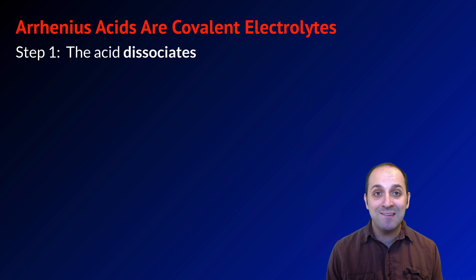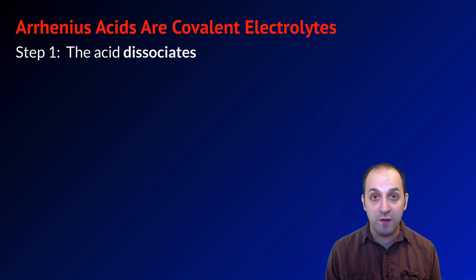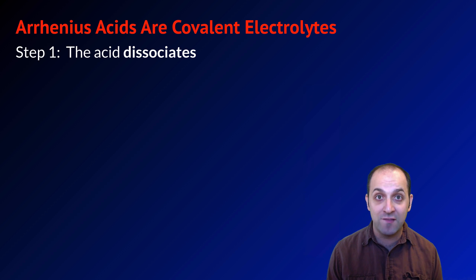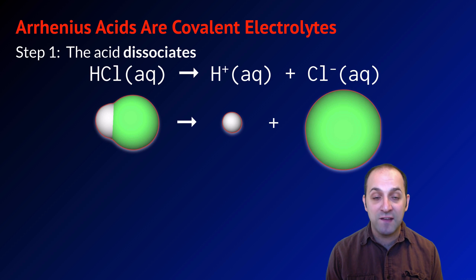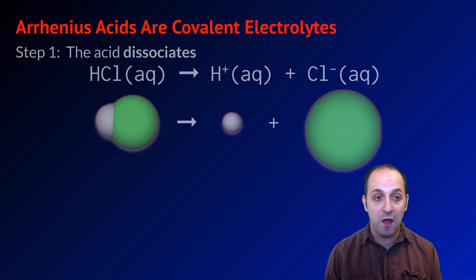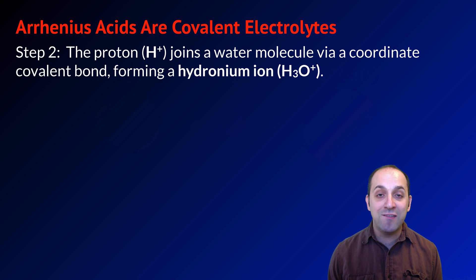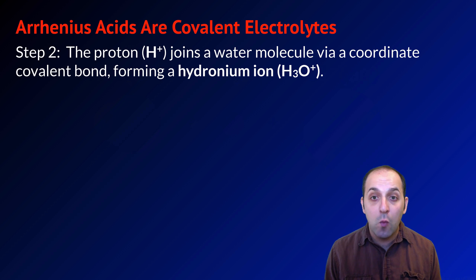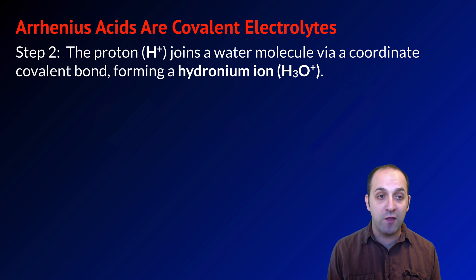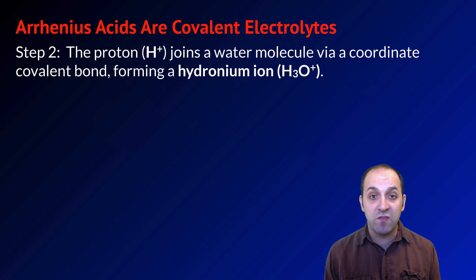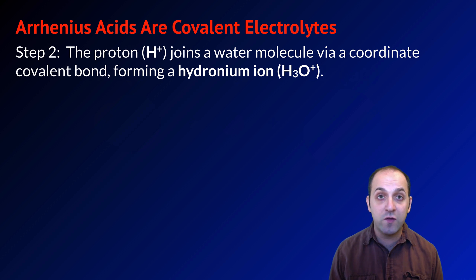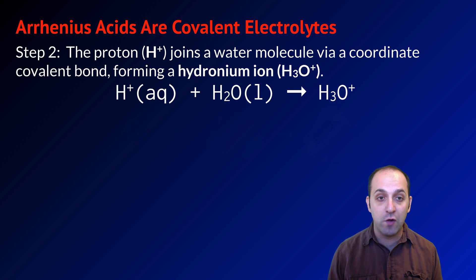Arrhenius acids are covalent electrolytes — really the only covalent electrolytes you need to be familiar with — because the acid dissociates. Here we can see HCl breaking apart into its H⁺ ion and its Cl⁻ ion. That H⁺ ion is then going to associate with an H₂O molecule via a coordinate covalent bond. Oxygen in a water molecule has two unshared pairs of electrons, and that proton attaches on to a water molecule, making an H₃O⁺ ion — a hydronium ion.